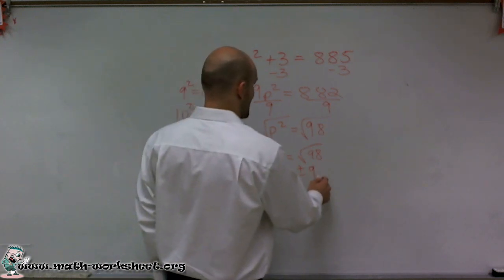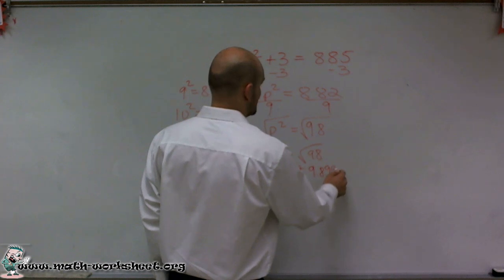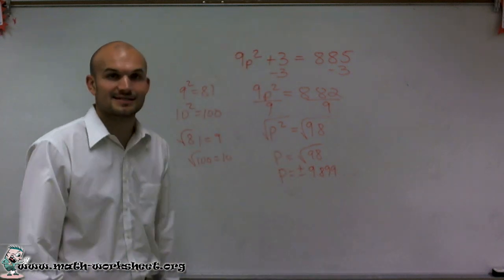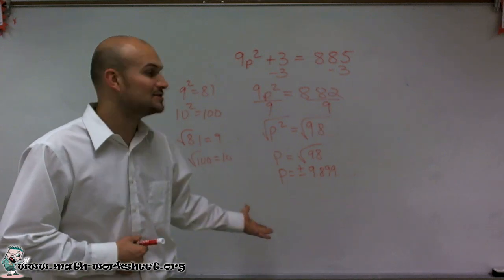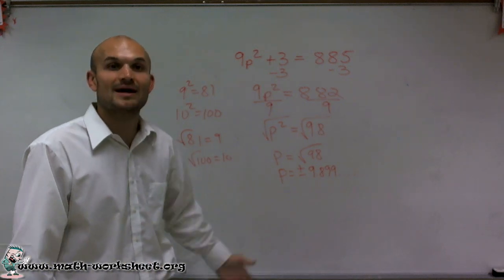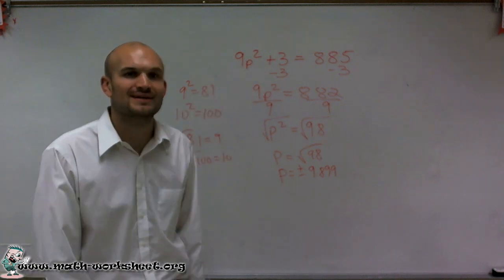Which in this case is going to be 9.899 dot dot dot. It's going to go on forever. So there you go, ladies and gentlemen. That's what happens when you take the square root to find an irrational number for solving for your value p. Hope you enjoy it. Thanks.